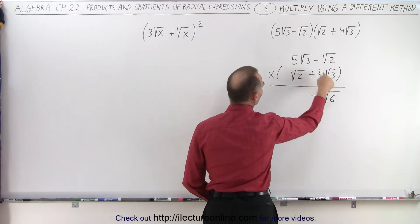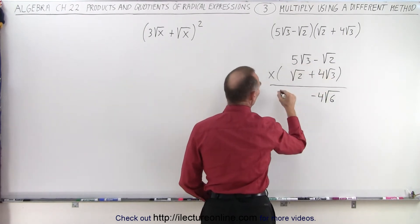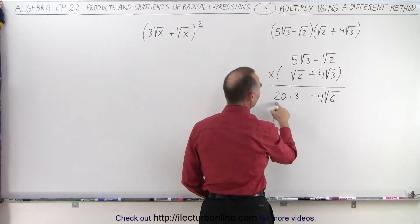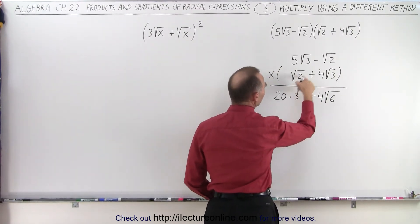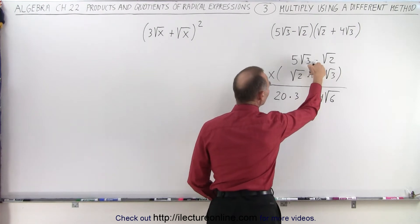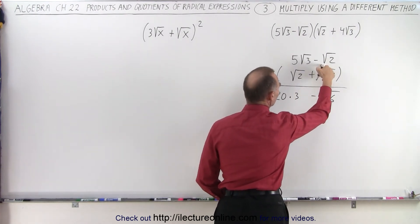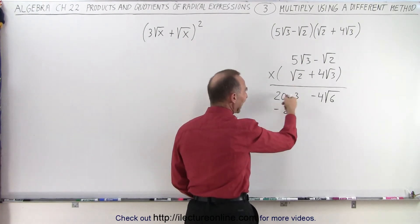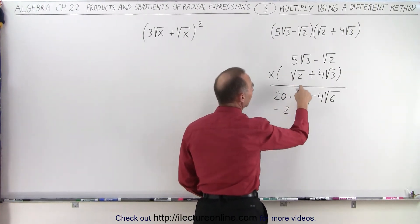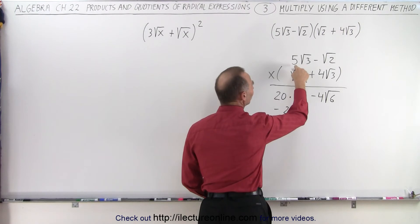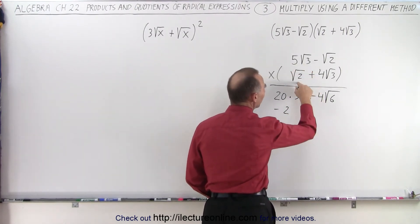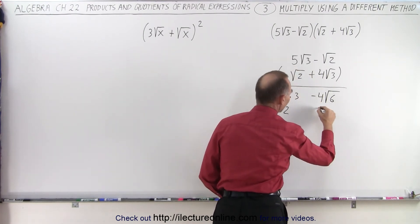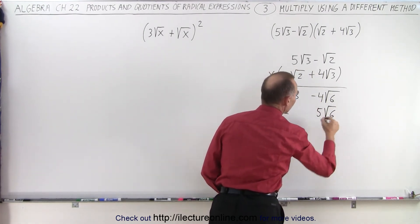Then we multiply these two together: 5 times 4 is 20 and the square root of 3 times the square root of 3 equals 3, so that's just an integer. Then we multiply these two together: minus the square root of 2 times the square root of 2, which is simply minus 2. We'll put it in this column because that product is an integer. Then the square root of 2 times 5 times the square root of 3 goes in this column because the result will be 5 times the square root of 6.